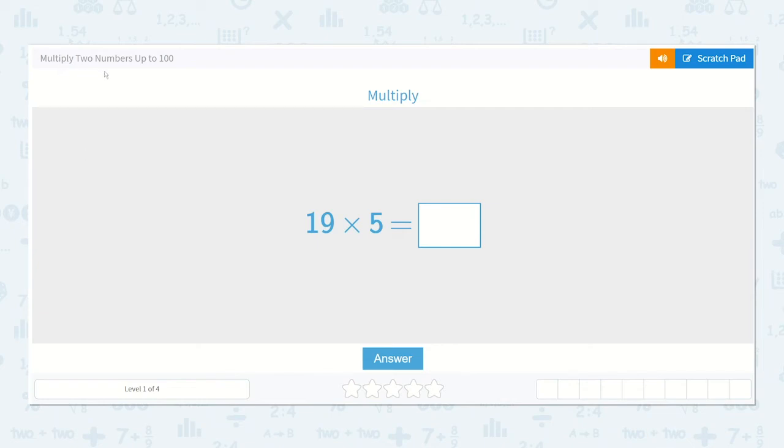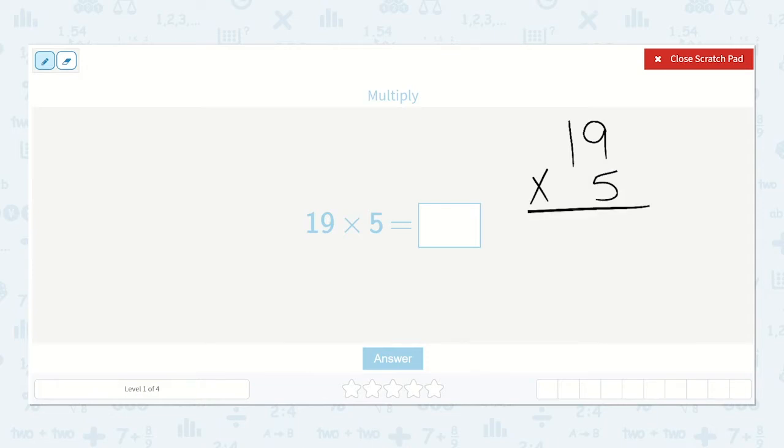Let's look at the lesson Multiply Two Numbers Up to 100. It says multiply. So we have 19 times 5, so we can write it 19 times 5. Now on the bottom, I always start with the number on the right, the number in the ones place. So I'll multiply 5 times 9 first, and that is 45. So my 5 goes in the ones place, and my 4 goes in the tens place. Now we have 5 times 1. 5 times 1 is 5, plus 4 more is 9. So our answer is 95.